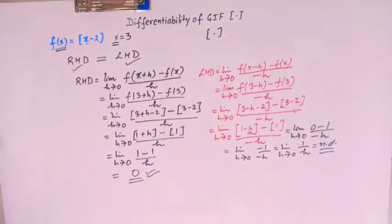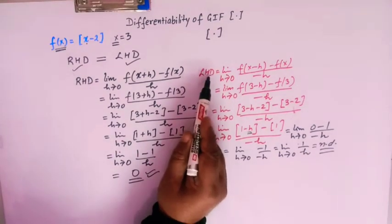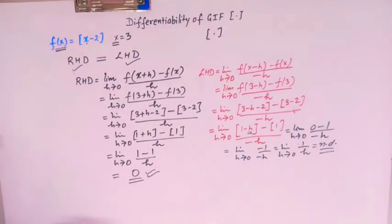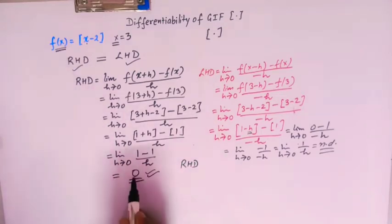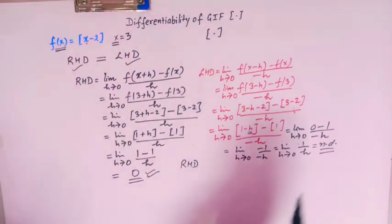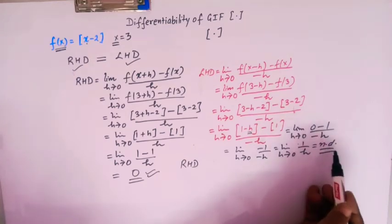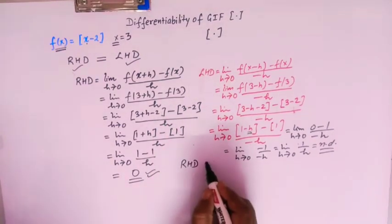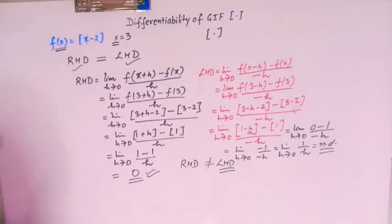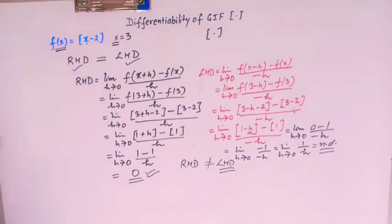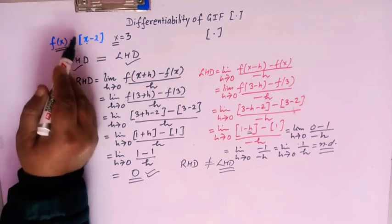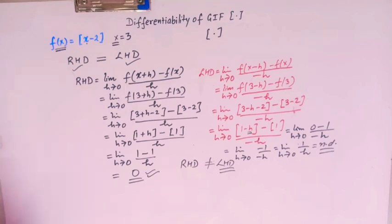Therefore the left hand derivative does not exist — it is not a finite quantity. The right hand derivative exists and is finite, equal to 0, but the left hand derivative is infinite and not defined. Hence the right hand derivative is not equal to the left hand derivative. For a differentiable function, both derivatives must exist, be finite, and be equal. Since this condition is not fulfilled, we conclude that f(x) = ⌊x⌋ - 2 is not differentiable at x = 3.